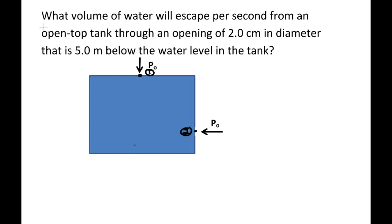Bernoulli's equation says that the pressure at one plus one half times the density times the volume at point one squared plus the density times G times Y1